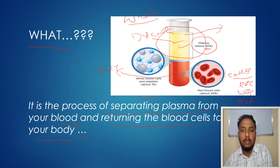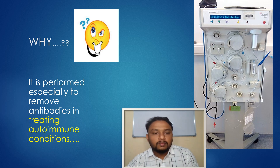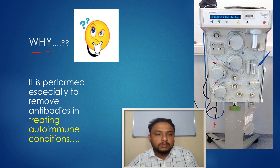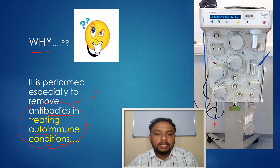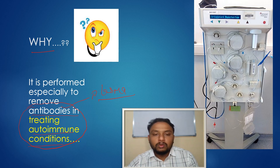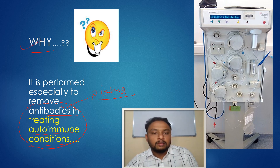Why is plasmapheresis required? It is performed especially to remove antibodies in treating autoimmune conditions. These antibodies are present in the blood plasma. In conditions like autoimmune diseases, we remove the antibodies — that is the main reason to perform plasmapheresis or plasma exchange.